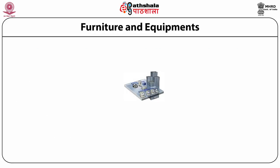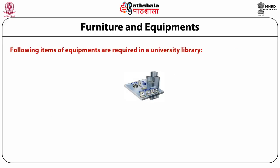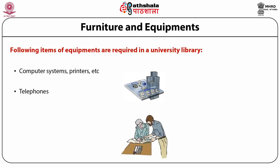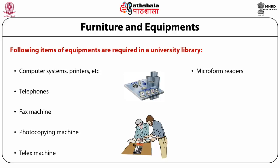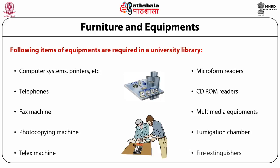Some items of equipment in addition to furniture are also required in a university library. These include computer systems, printers, telephones, fax machine, photocopying machine, telex machine, microform readers, CD-ROM readers, multimedia equipment, fumigation chamber, fire extinguishers, etc.